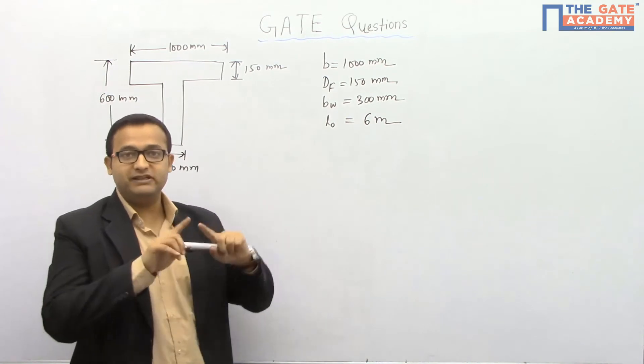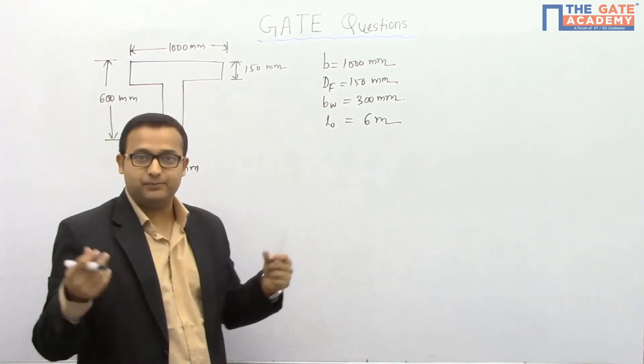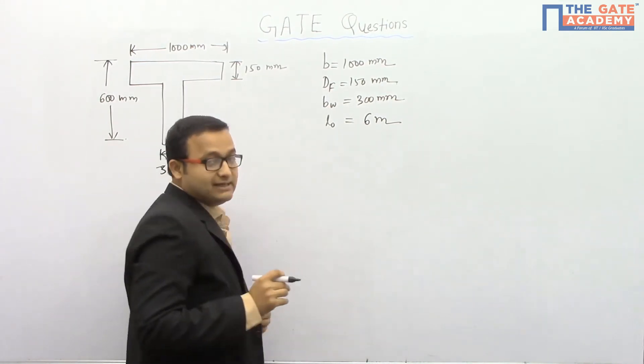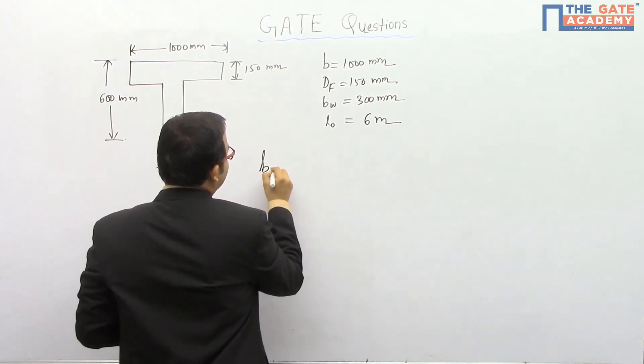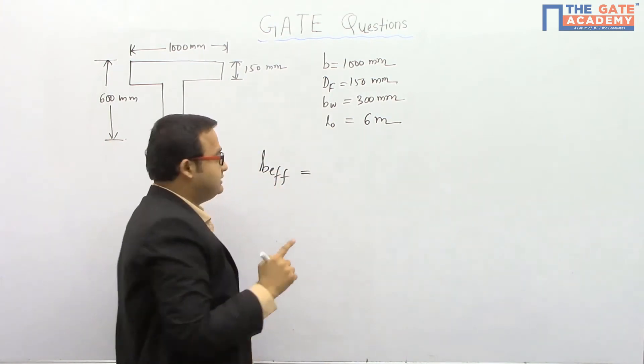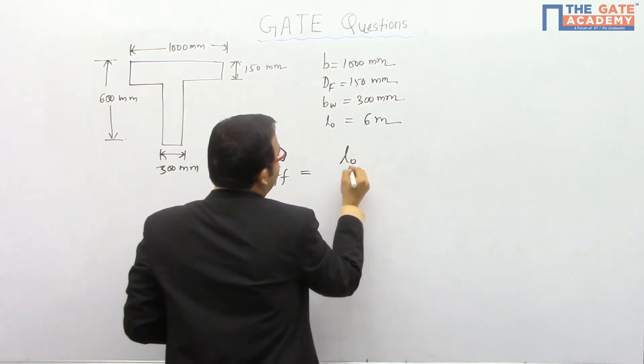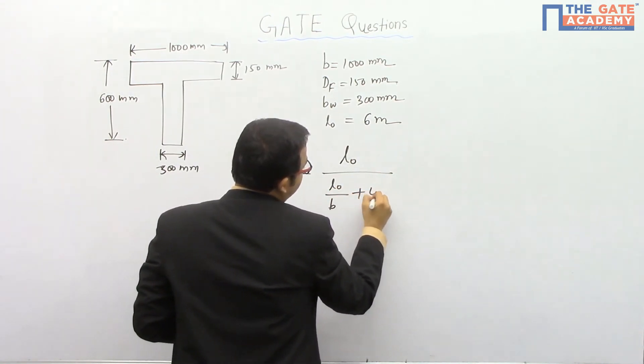L0 is the distance between the two points of contraflexure in the given beam. Right now it is simply supported, so it will be the same as effective span, 6 meters. So let's calculate. Since it is an isolated type of T beam, the formula to calculate B effective is: B effective equals L0 divided by L0 by B plus 4, plus BW.